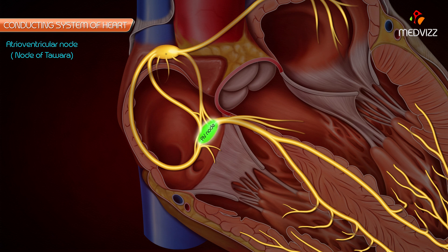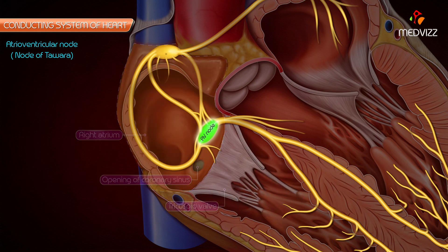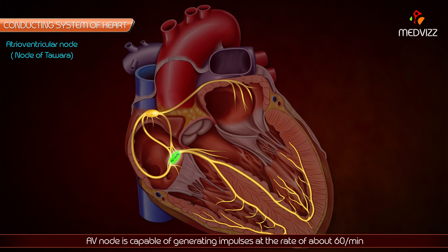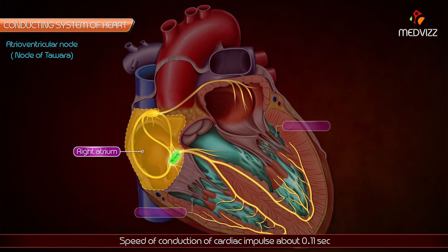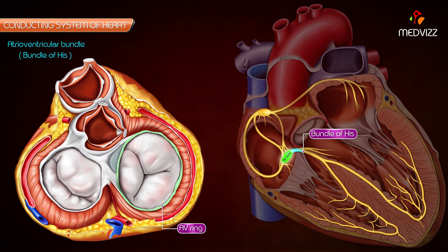The atrioventricular node, also known as the node of Tawara, is smaller than the SA node and is located in the lower part of the atrial septum just above the attachment of the septal cusp of the tricuspid valve or the opening of the coronary sinus. It conducts the cardiac impulse to the ventricle by the atrioventricular bundle. The AV node is capable of generating impulses at a rate of about 60 per minute, and the conduction delay of about 0.11 seconds provides sufficient time for the atria to empty their blood into the ventricles before the ventricles start contracting.